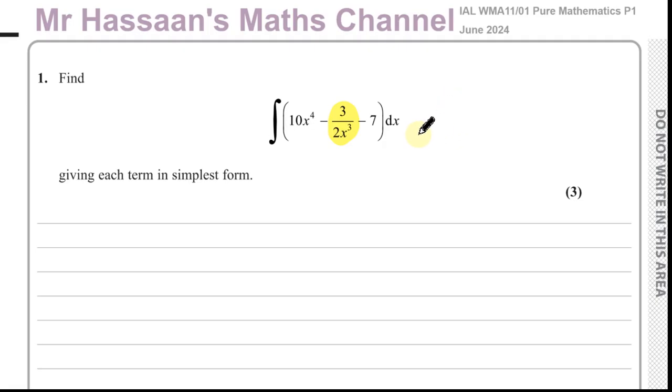A common mistake people make when they do this - basically what we have to have is the x term on the numerator. We're going to use the law of indices that if you have 1 over a to the power of n, that becomes a to the power of negative n. What we've got to understand is this power of 3 is only applied to the x, not the 2.